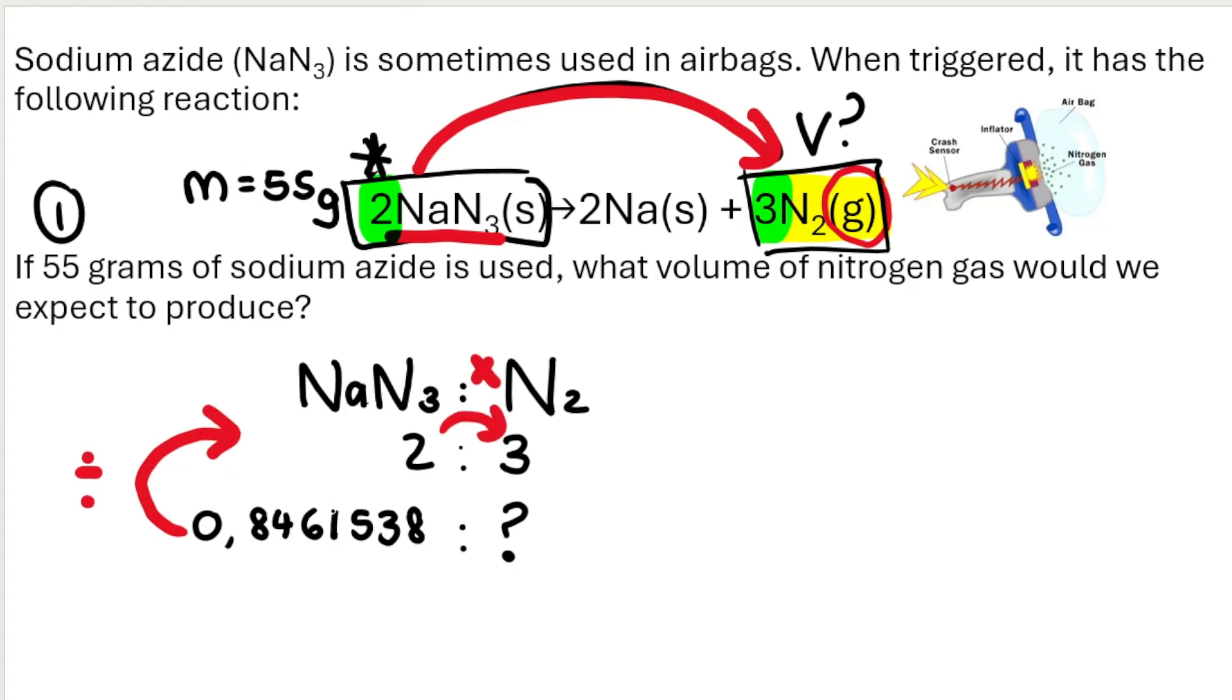So what I mean is what I type into my calculator is I type in 0.8461538. I divide that number by 2. Okay, you divide on the side, so divide by 2. And I times that by 3. And what I get is something like 1.2692307 and so on, moles of nitrogen.